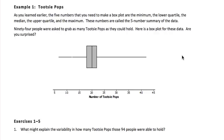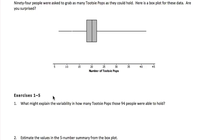Ninety-four people were asked to grab as many Tootsie Pops as they could hold. Here is a box plot for these data. Are you surprised? What might explain the variability in how many Tootsie Pops those 94 people were able to hold? One suggestion might be that they are different ages or different sized people. You would think that the bigger your hand is, the more Tootsie Pops you could grab at one time.